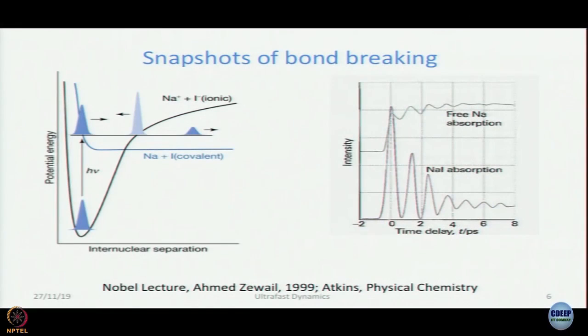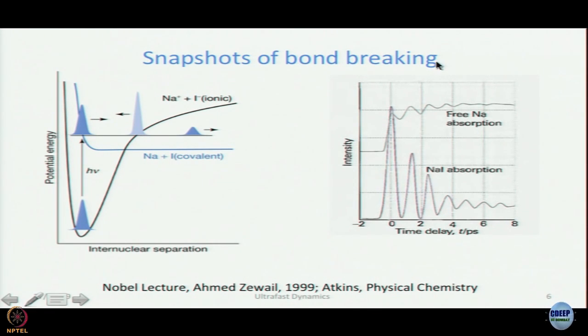This result alone perhaps would have been good enough for a Nobel Prize, but they studied many other things and tried to understand bond breaking in very great detail, obtaining what they called 'snapshots of bond breaking.' One of the things they studied was NaI — sodium iodide.